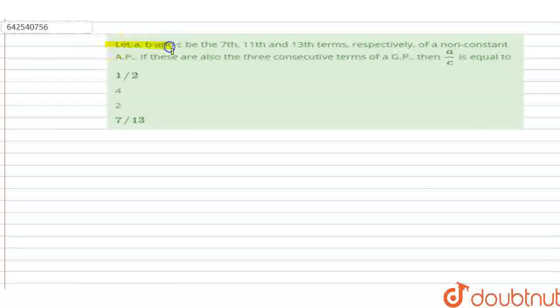Hello, welcome to Doubtnut. In this question, let A, B, C be the 7th, 11th, and 13th terms respectively of a non-constant AP. If these are also three consecutive terms of a GP, then we have to find the value of a/c. We have four options.